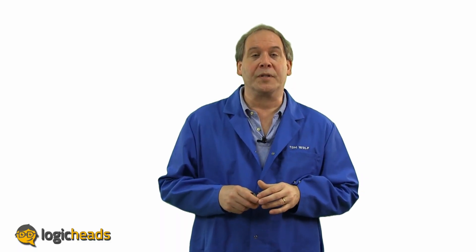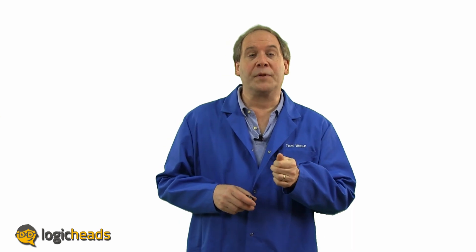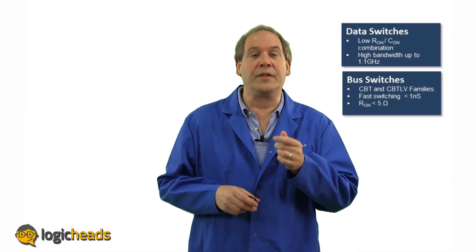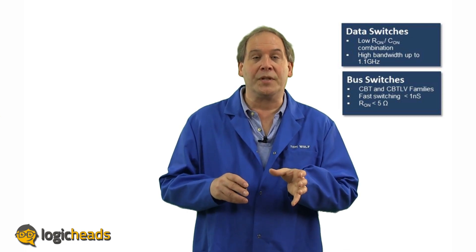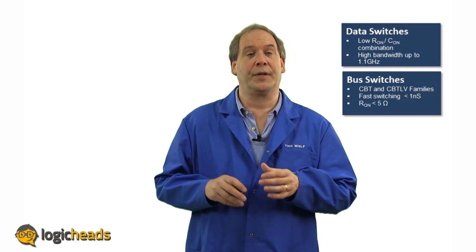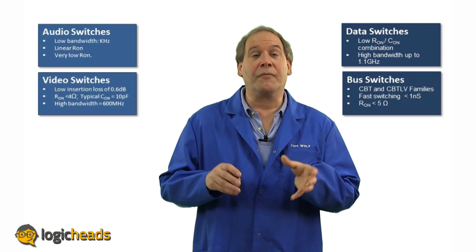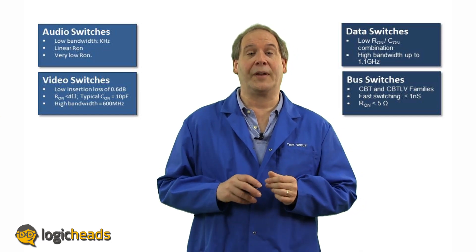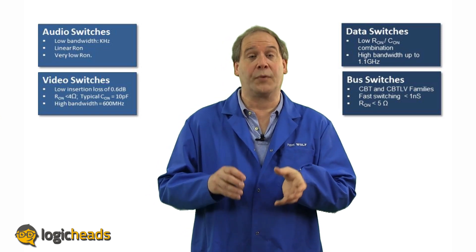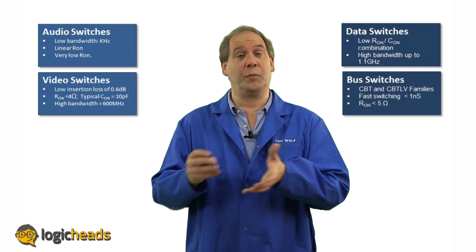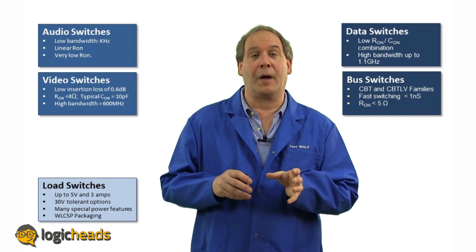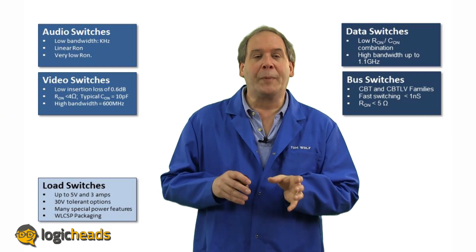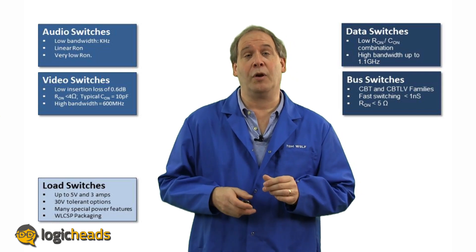There are several different categories of analog switches, but the easiest way is to think of them in three different groups. Number one, general purpose switches. Data switches and bus switches are all involved in switching and routing digital data signals — you'll find them in network routing equipment, USB hubs, etc. Video switches and audio switches are functionally the same, but the FETs have been tuned for very specific applications — low attenuation for audio and high frequency response for video. And finally, load switches, which operate at DC and are so specialized that we'll dedicate an entire episode to how they operate.